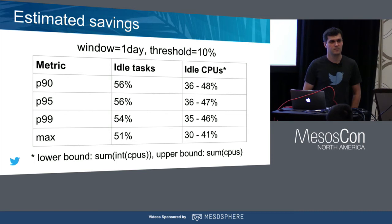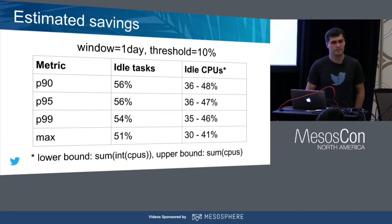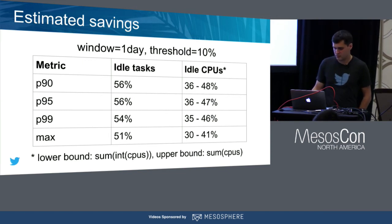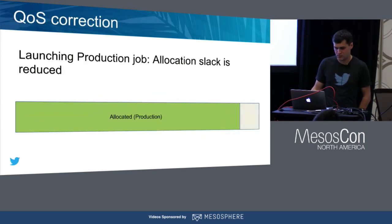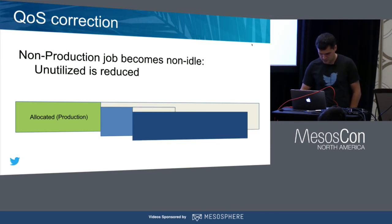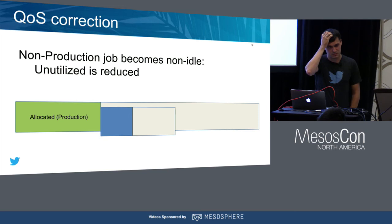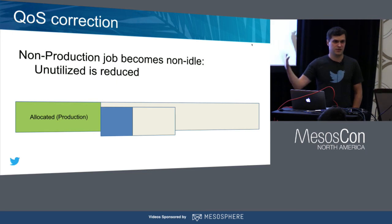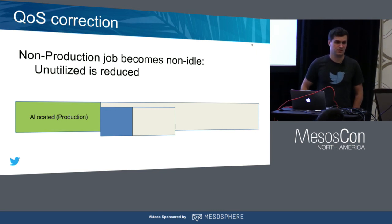Question: Have you looked into memory oversubscription using the Linux OOM controller to kill particular tasks? Answer: Memory oversubscription is not something we consider. We're not memory bound right now — our main issue is that CPU allocation is quite high while there are still idle resources, so we can postpone buying more hardware. But for memory, there is just no need for now.